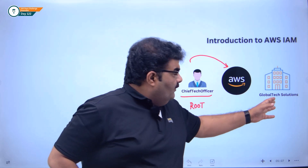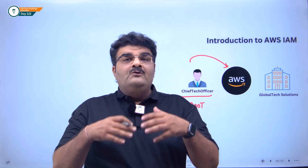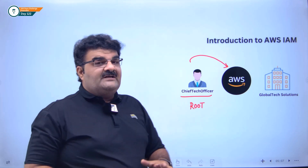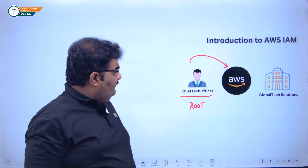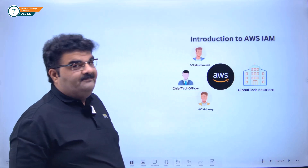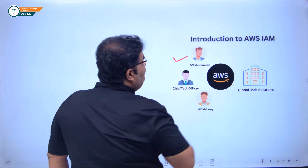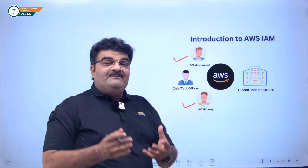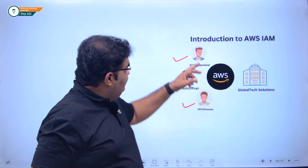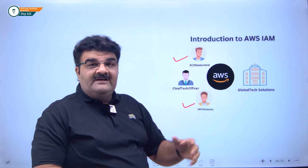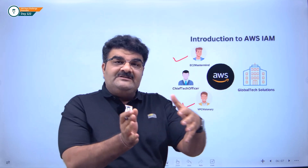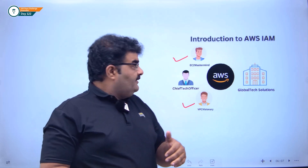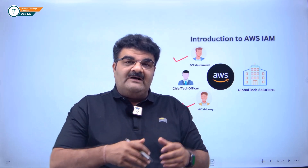Now, Global Tech is a giant company. They have thousands of servers, databases, storage services, and all this. My question is: can Mr. Chief Tech Officer maintain each and every service alone? Definitely not. So, Mr. Chief Tech Officer, who is the root user, hired two people. Our first person is the EC2 Mastermind and another person is the networking guy known as VPC Visionary. These two guys are going to help Mr. Chief Tech Officer — EC2 Mastermind will maintain AWS EC2 instances, and VPC Visionary will handle the networking setup like Virtual Private Cloud and all this.